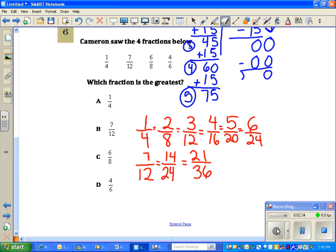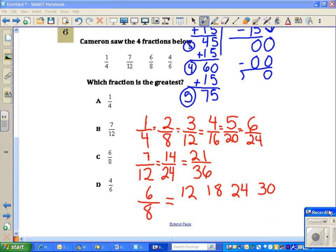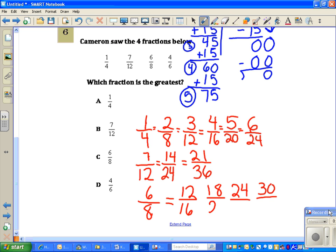I'm going to do six-eighths. Tap my six and roll. I'll roll these out a few times: six, twelve, eighteen, twenty-four, thirty. Roll my eights: eight, sixteen, twenty-four, thirty-two, forty. Looks like I'm really doing okay with those denominators. Everyone's equal in the same family.